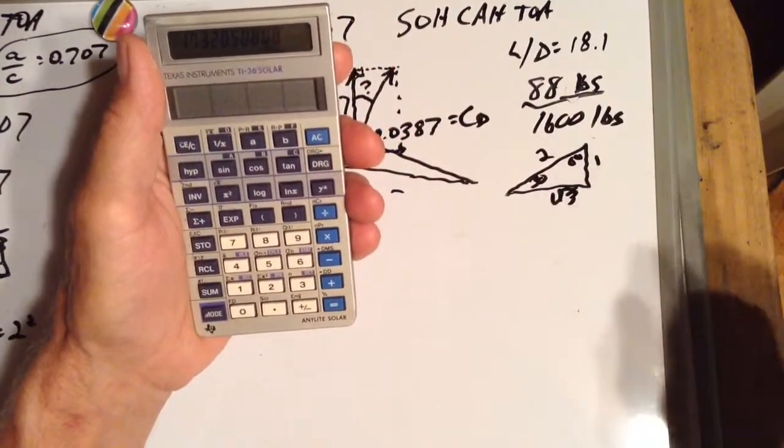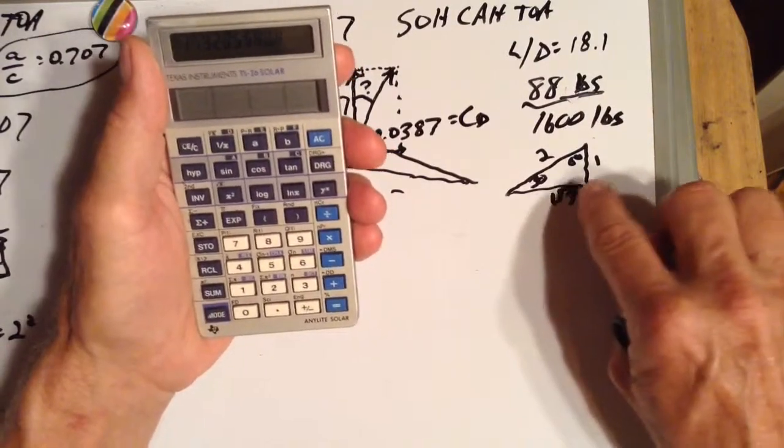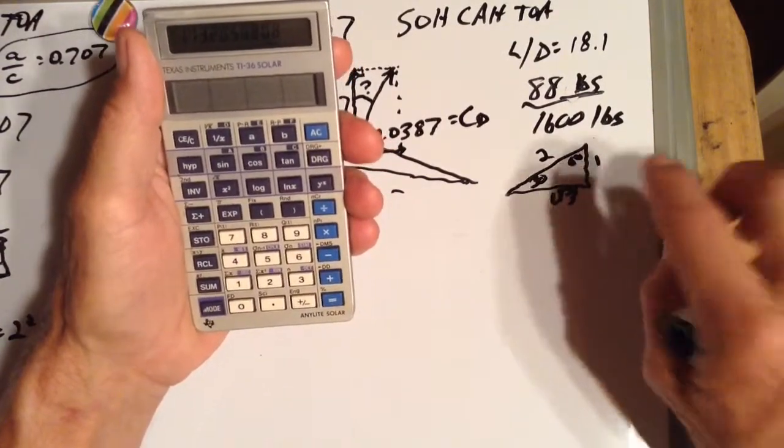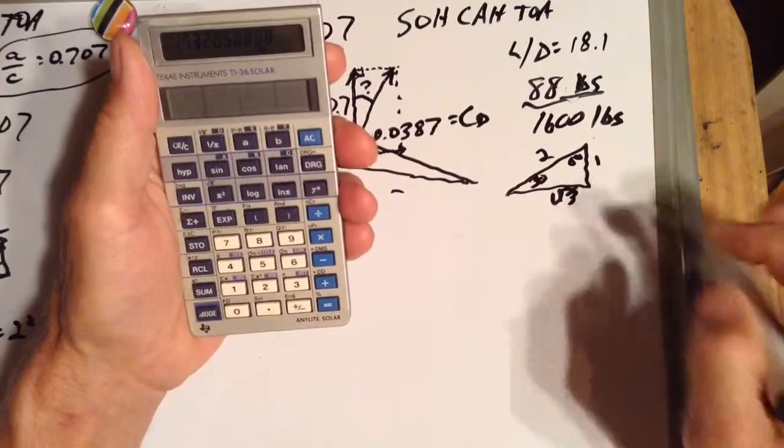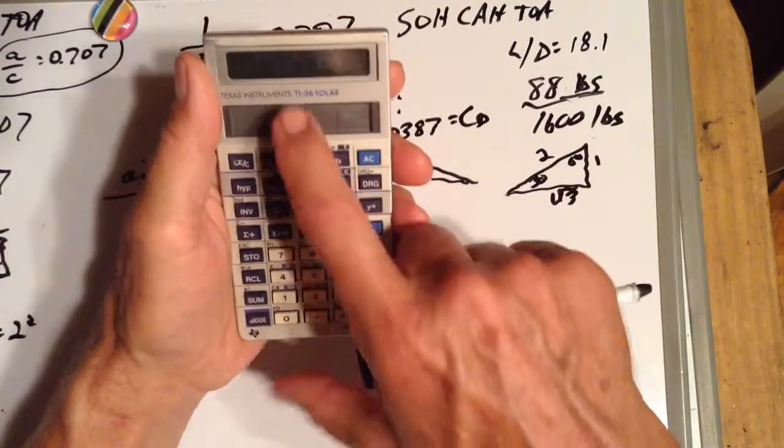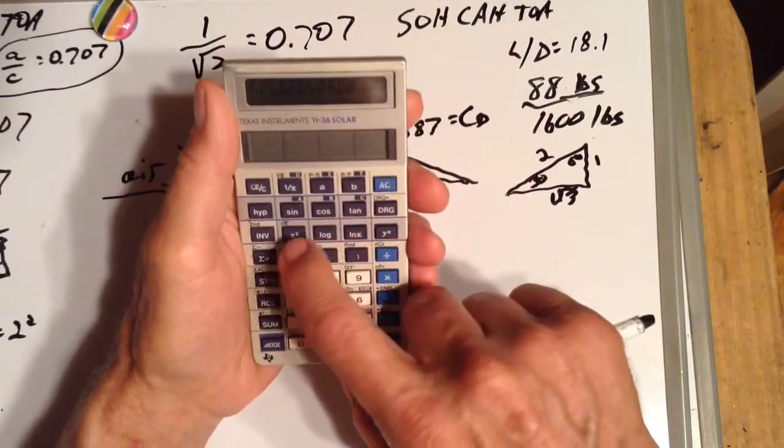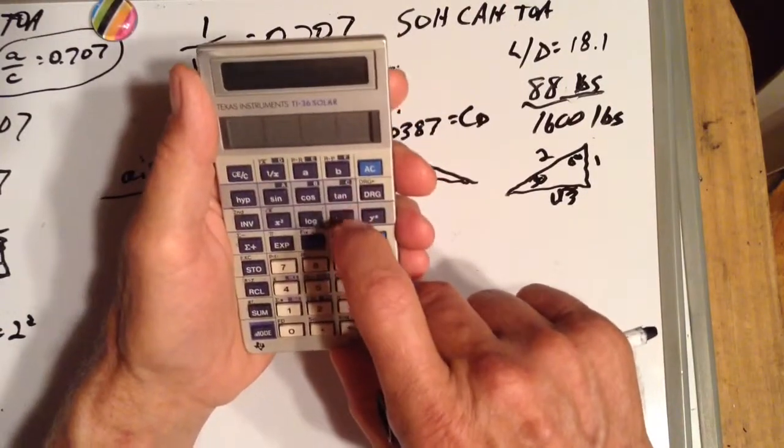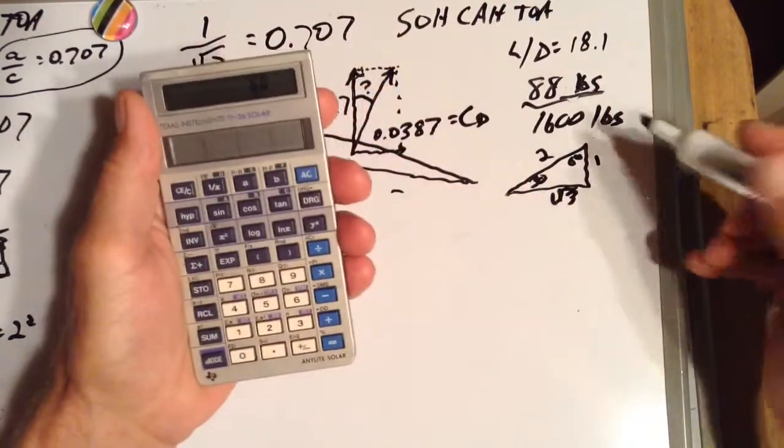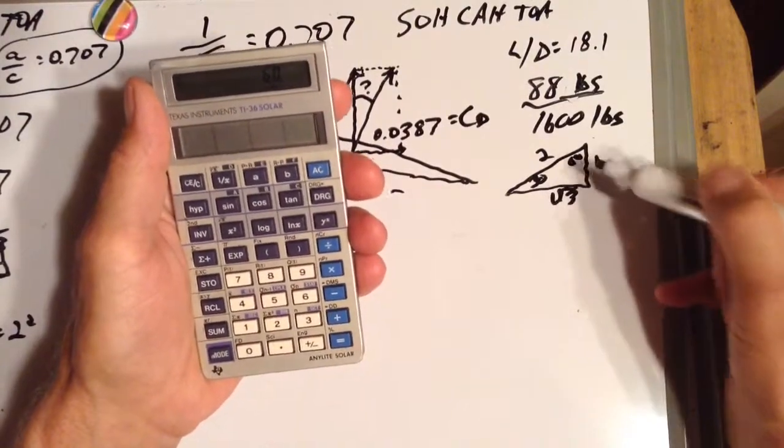So if we know that and we want to find out that angle, we just find out the arc tan of square root of 3 over 1. So we have square root of 3 over 1 on our screen, 1.732. Now we hit inverse tan, and it'll give us 60, which is what our angle there is.